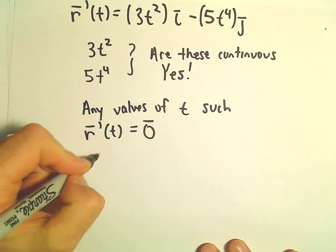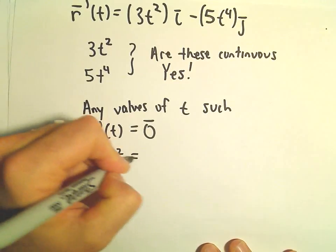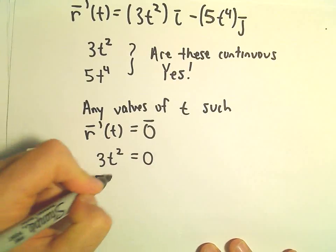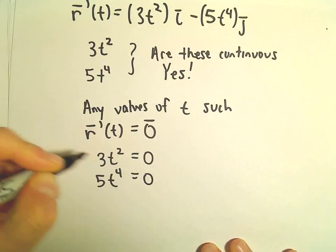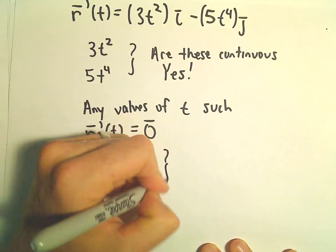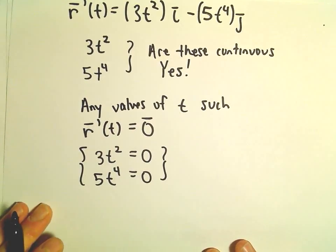So what we do is we just take each component, 3t squared, set it equal to 0, 5t to the fourth, set that equal to 0. And we try to solve this little system of equations simultaneously.